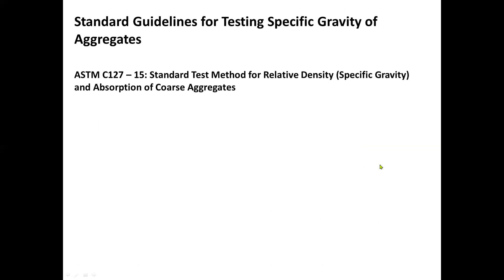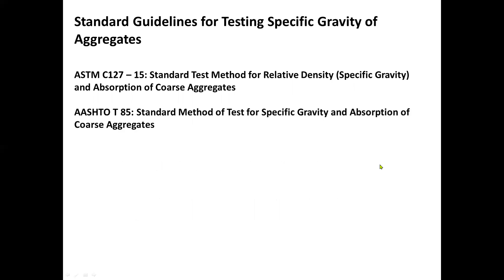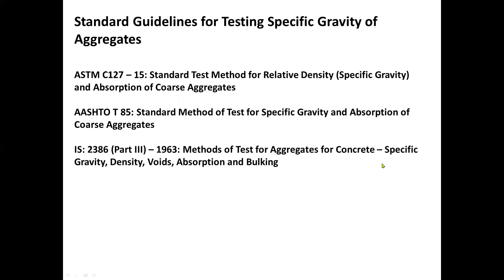These are the standard guidelines for testing specific gravity of aggregates. First, you have to follow the guideline under ASTM C127-15, the standard test method for relative density or specific gravity and absorption of coarse aggregates. Second, we have AASHTO T85, the standard method of test for specific gravity and absorption of coarse aggregate. And IS-2386 Part 3 (1963), methods of test for aggregates for concrete: specific gravity, density, voids, absorption, and bulking.